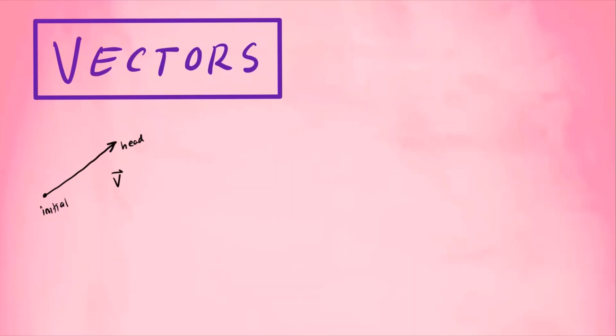A vector has two properties. It has magnitude, which tells us the length of the vector. It also has direction — the arrow indicates the direction of the vector.